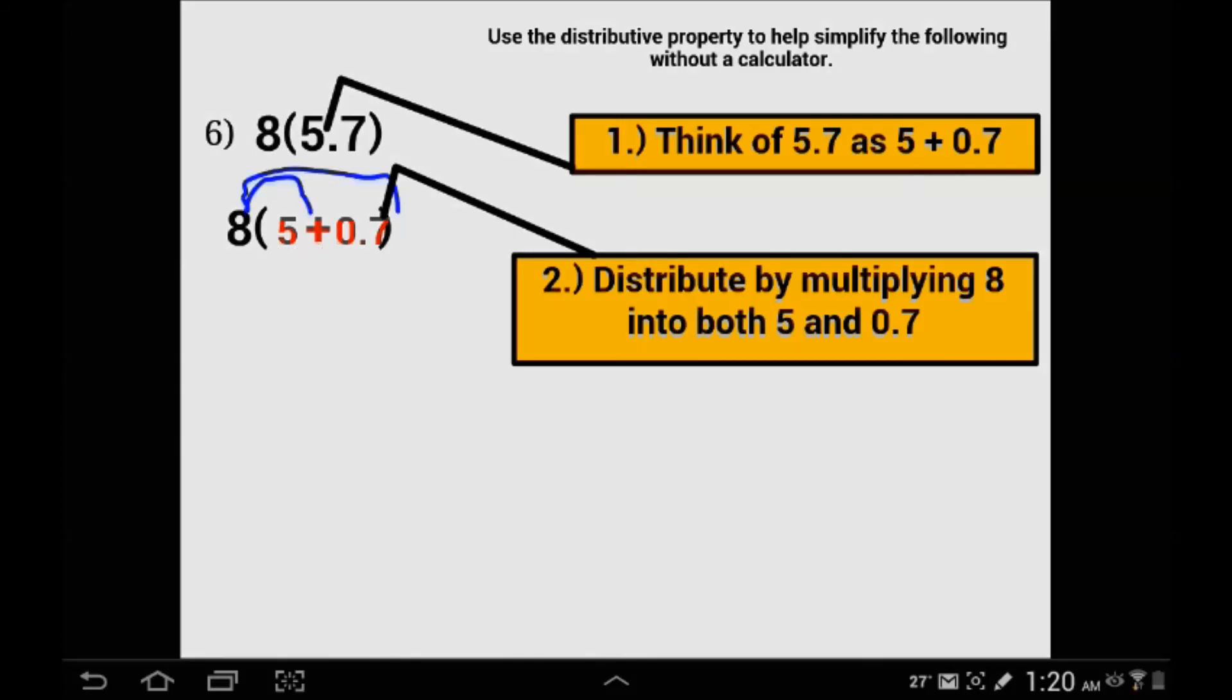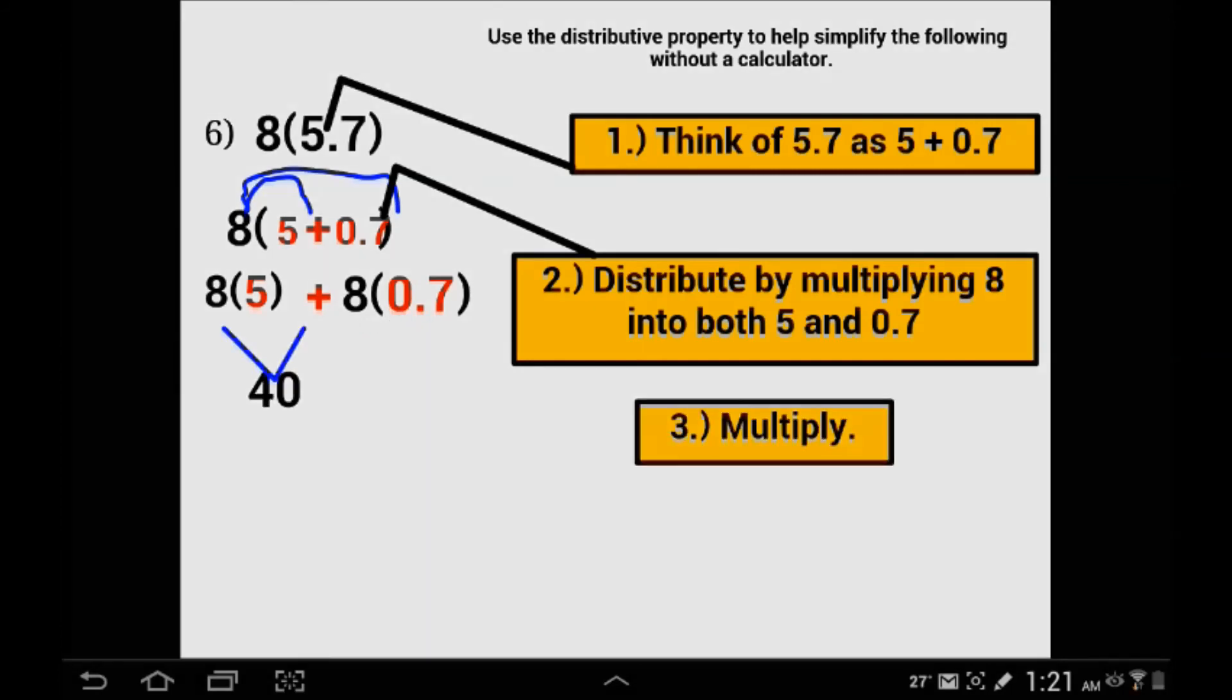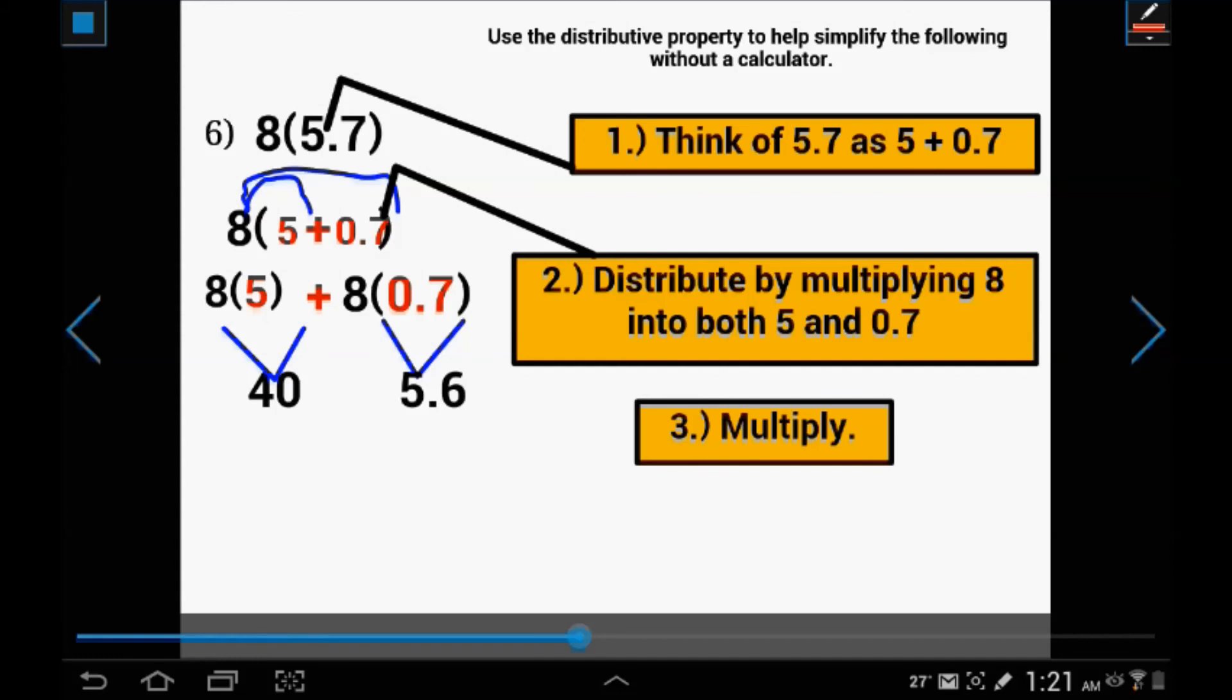The number 8 is being distributed into the 5 and the 7 tenths. We have 8 times 5 and 8 times 7 tenths. 8 times 5 is 40 and 8 times 7 is 56. We are multiplying 8 times 7 tenths, so the decimal is between the 5 and the 6, giving us 5.6. That makes the arithmetic very simple.